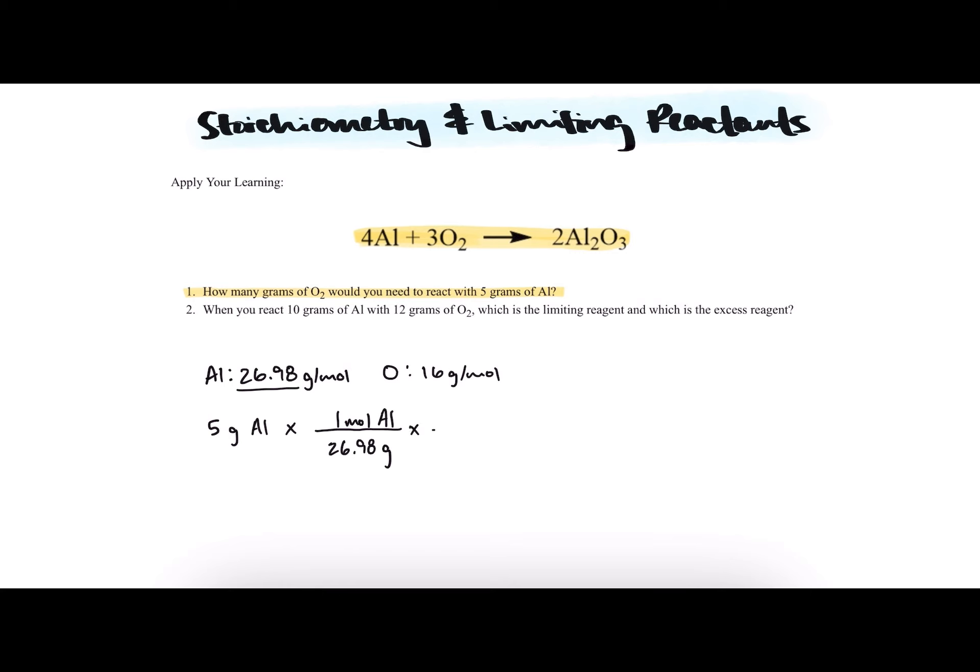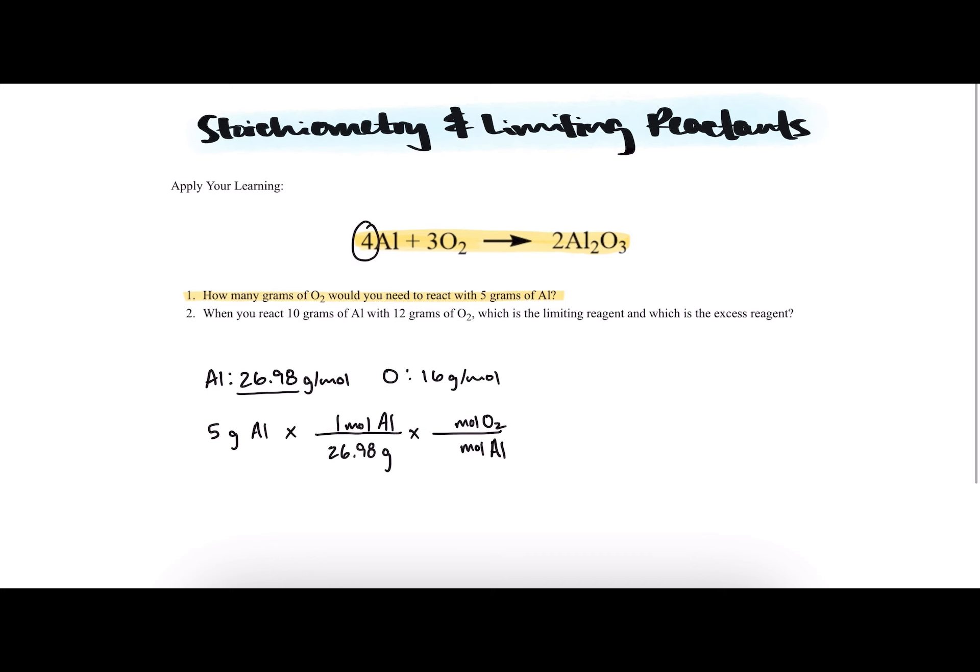Then if we want to find moles of oxygen from moles of aluminum, we can look at the chemical equation and form a ratio with the coefficients. We see that 3 moles of O2 corresponds with 4 moles of aluminum.